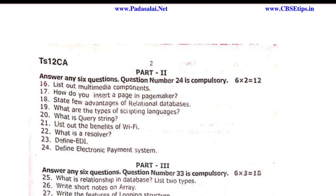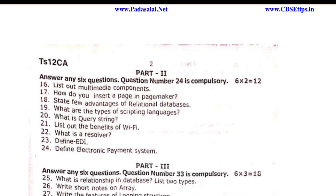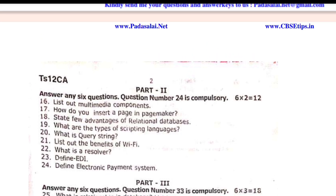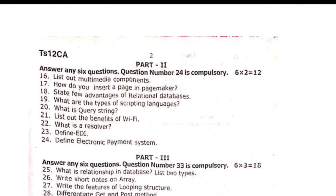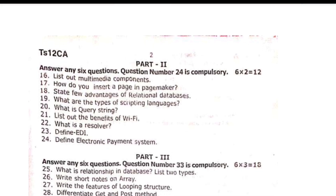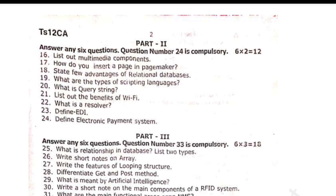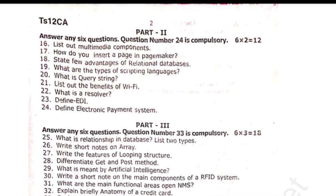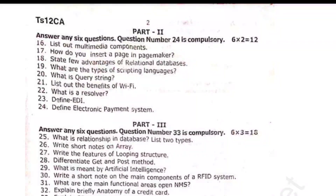The next one is Part 3, worth 3 marks. The 33rd question is compulsory: what is a relationship in a database, list 2 types; write short notes on array; write the features of looping structure; differentiate GET and POST method; what is meant by artificial intelligence — explain briefly; and anatomy of a credit card.